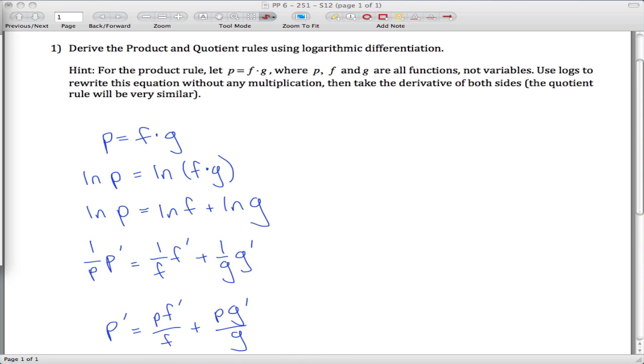Okay, we're going to do the exact same thing over here, but now the quotient rule, so maybe Q equals F over G, so the natural log of Q, natural log of Q is the natural log of F over G.